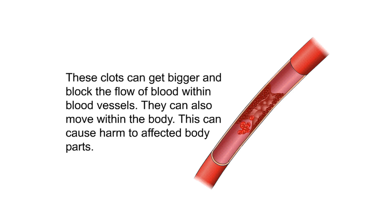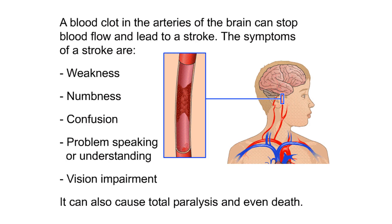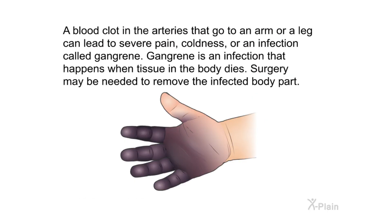These clots can get bigger and block the flow of blood within blood vessels, and they can also move within the body, causing harm to affected body parts. A blood clot in the arteries of the brain can stop blood flow and lead to a stroke. The symptoms of a stroke include weakness, numbness, confusion, problems speaking or understanding, and vision impairment.